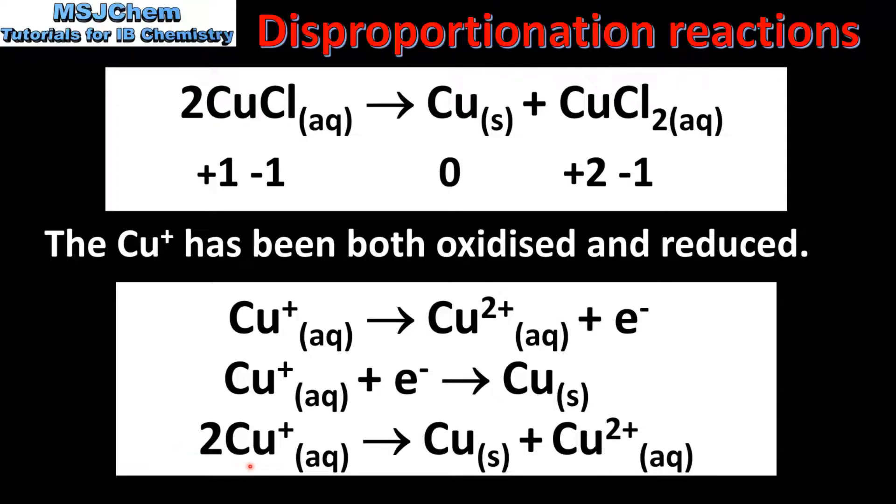From this we can see that the Cu⁺ ion is being both oxidized and reduced. So the Cu⁺ ion is acting as both an oxidizing and reducing agent. Therefore, this is an example of a disproportionation reaction.